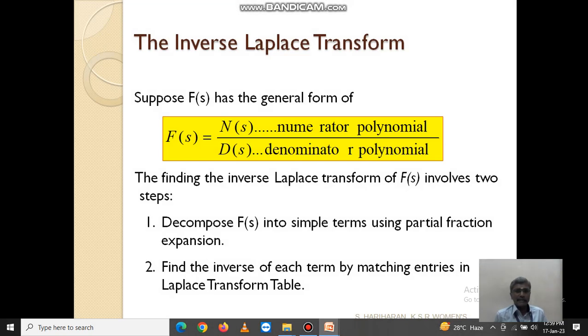Next: the inverse Laplace transform. Suppose F(s) has the general form F(s) = N(s)/D(s), where N(s) is the numerator polynomial and D(s) is the denominator polynomial. Finding the inverse Laplace transform involves two steps: First, decompose F(s) into simple terms using partial fraction expansion. Second, find the inverse of each term by matching entries in the Laplace transform table.